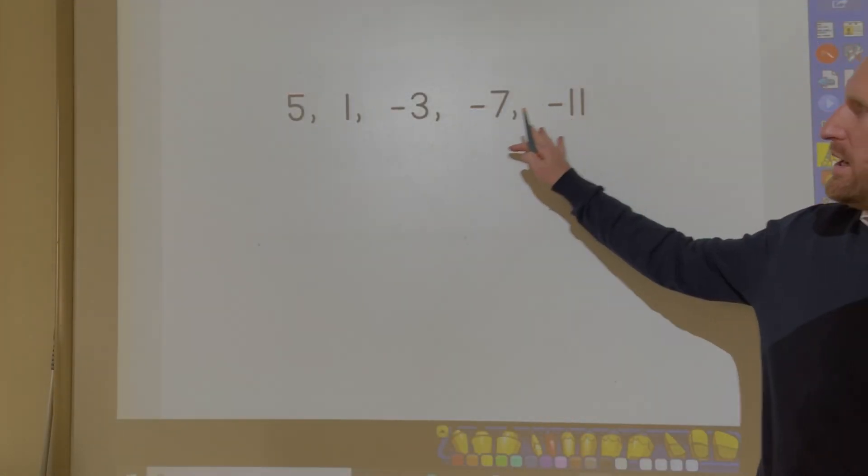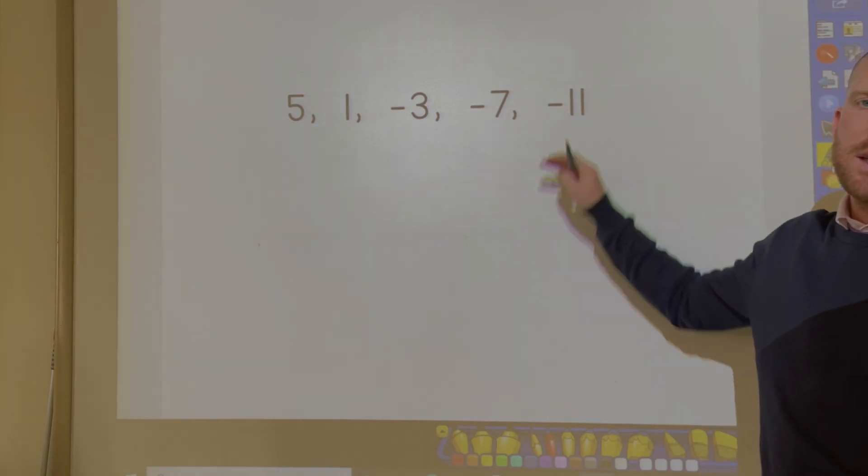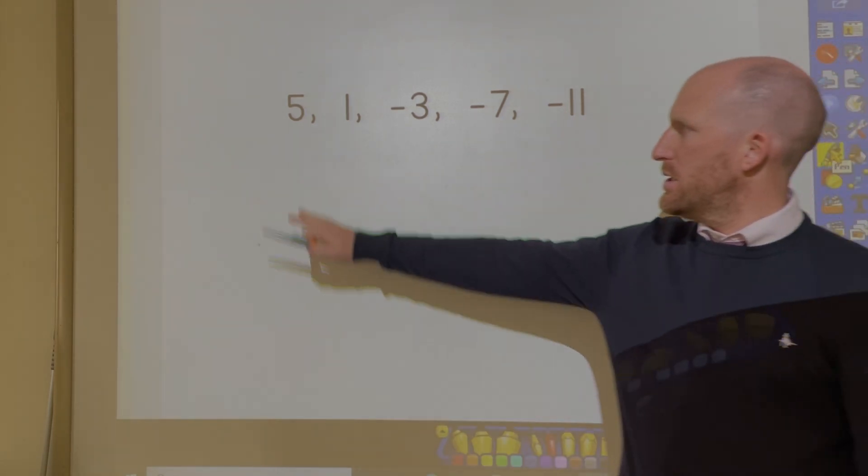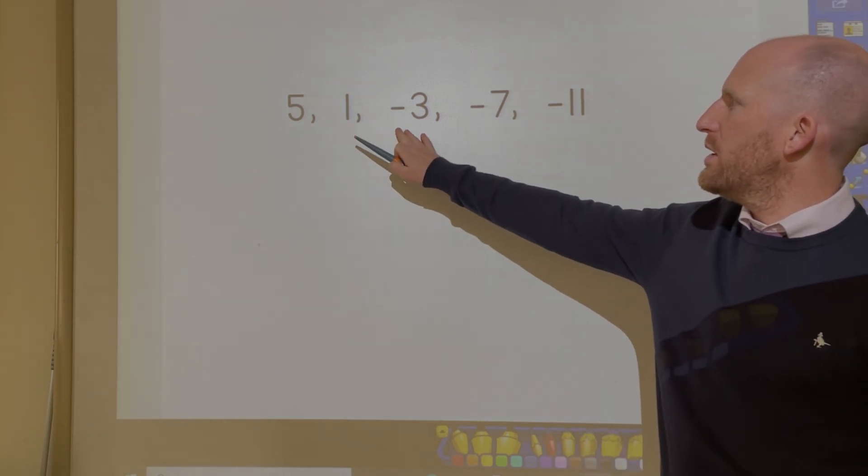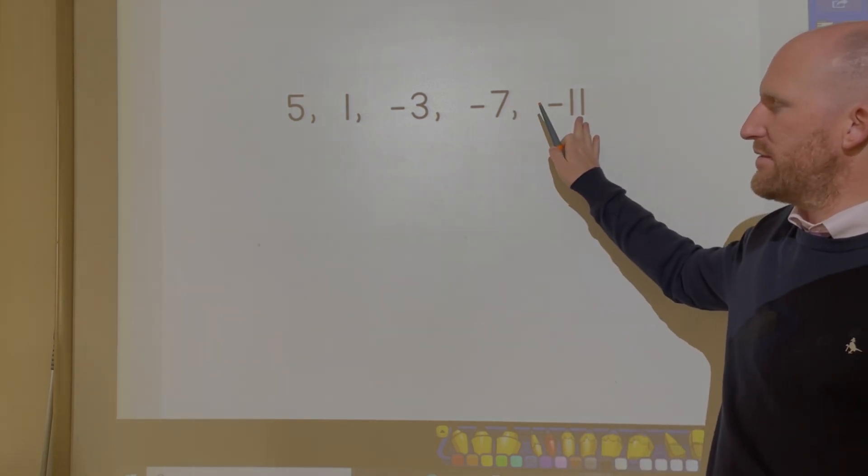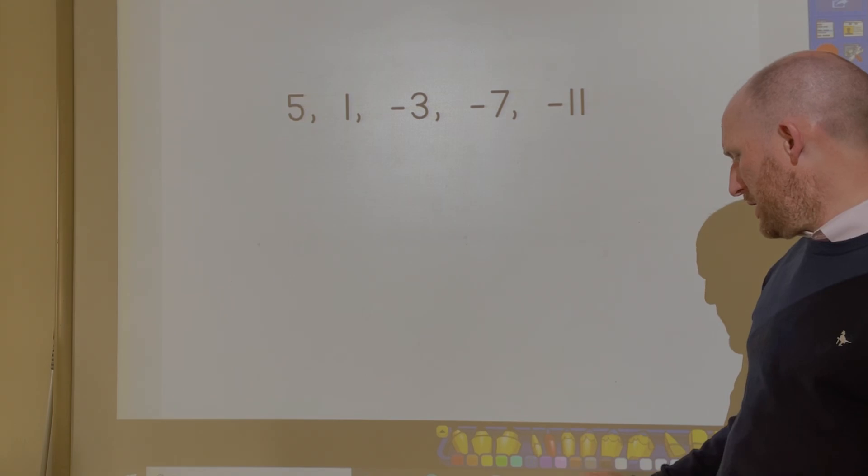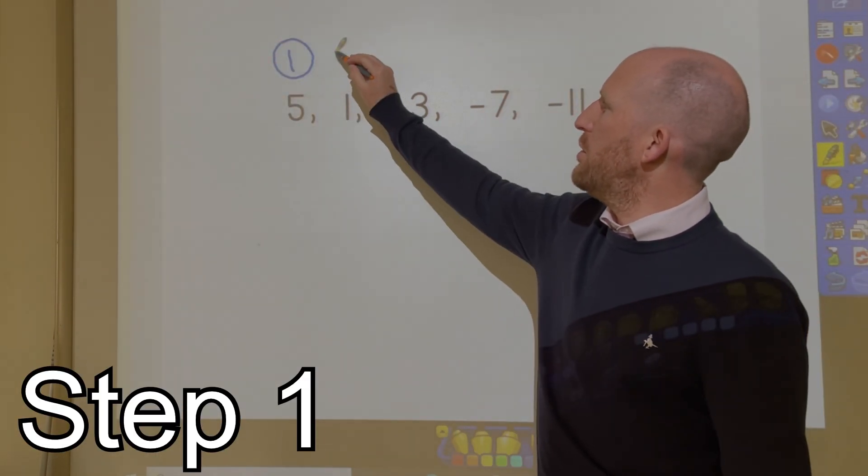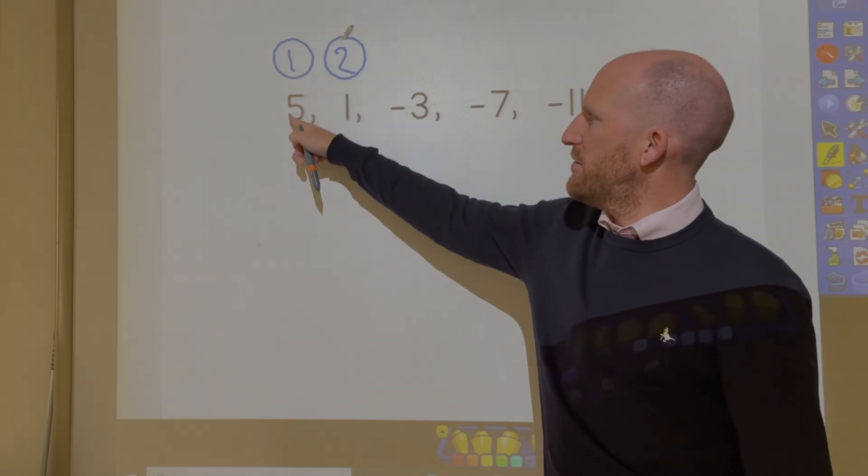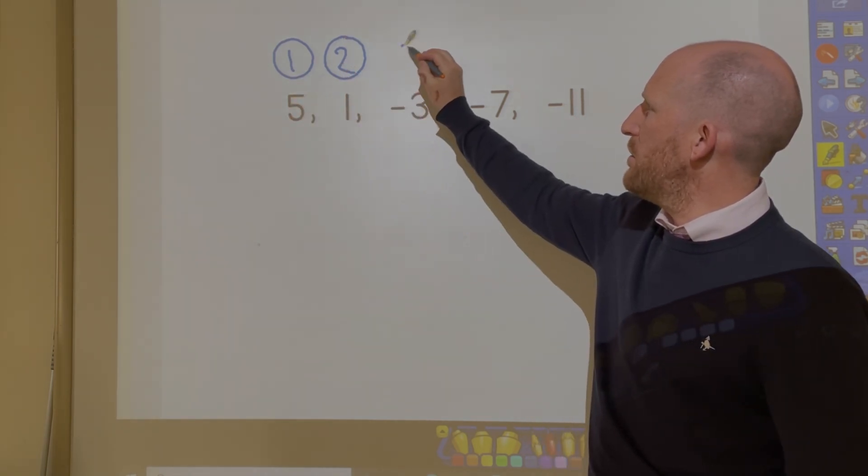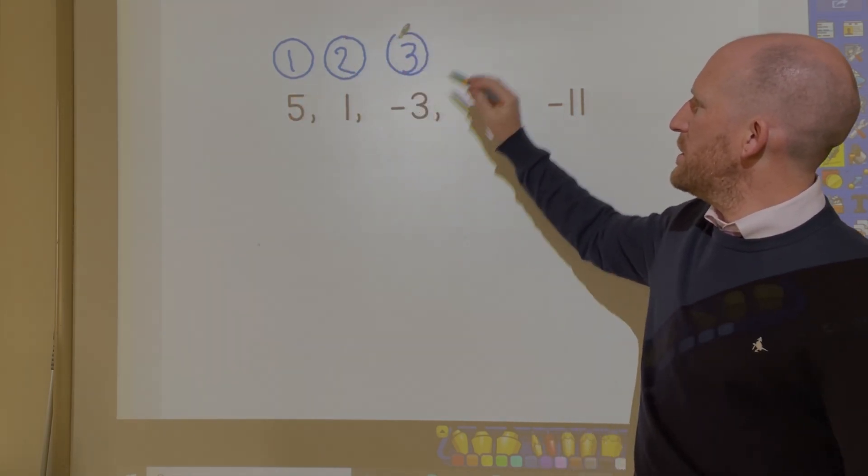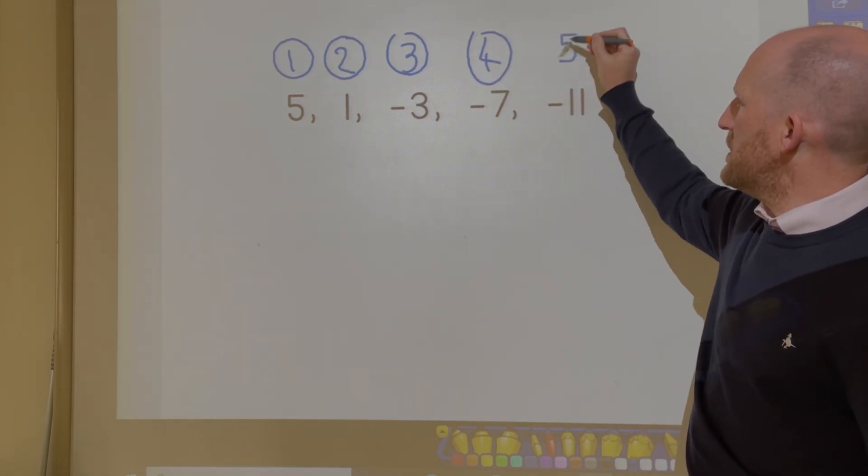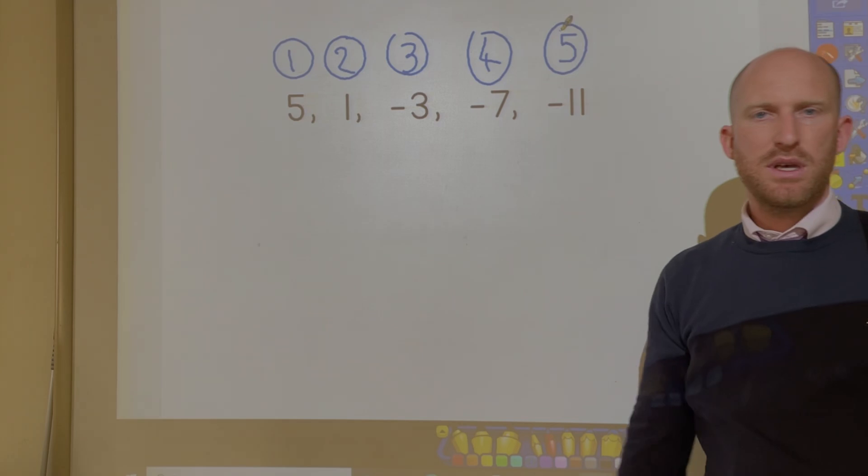In my second example, I have another decreasing set of numbers in a sequence. So I have 5, 1, negative 3, negative 7, negative 11. So step 1, I need to find out which numbers there are in the sequence. This is the first number in the sequence, this is the second number, this is the third number in the sequence, this is the fourth number in the sequence, this is the fifth number in the sequence.